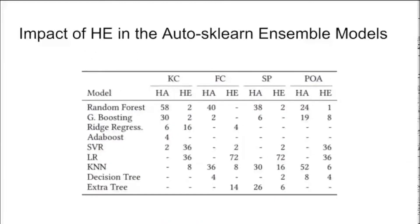Here is the impact of house embeddings in the auto-sklearn ensemble models. Models created by auto-sklearn combine multiple models, each with a weight in the final prediction. When using raw house features (HA), more sophisticated models such as random forests have a higher weight — random forest got the highest weight in the KC, FC, and SP datasets for the HA feature set. Whereas when using house embeddings as feature set, simpler models like linear regression have a higher weight — in fact, linear regression has the highest weight across all datasets when using house embeddings.